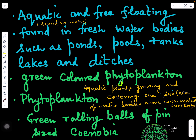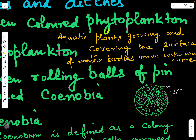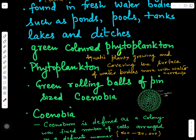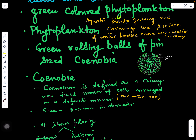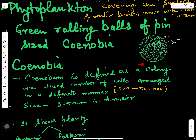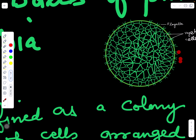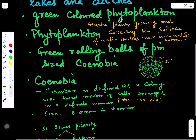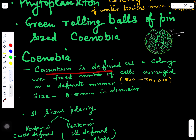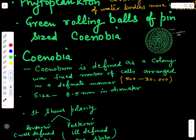The body of Volvox is a coenobium — it appears in water as green rolling balls of pin size. A coenobium is a kind of colony where many cells are connected with each other in a uniform pattern. Two flagella are present on each cell, helping in locomotion. A coenobium is defined as a colony with a fixed number of cells arranged in a definite manner.